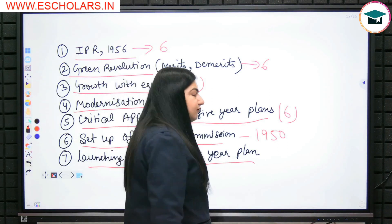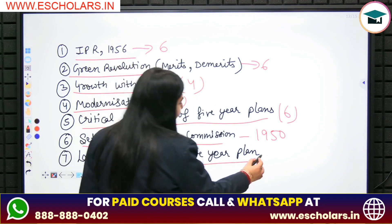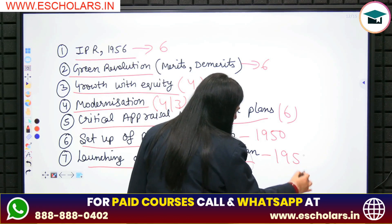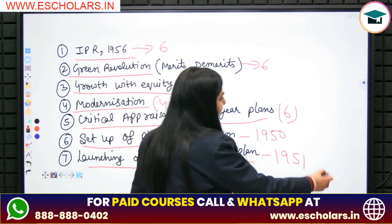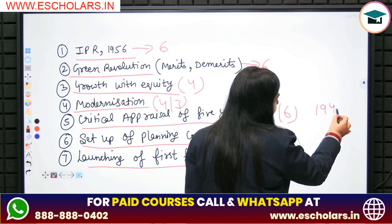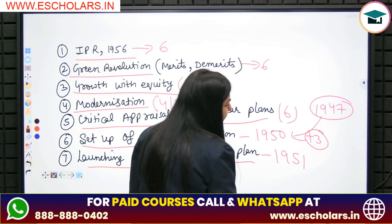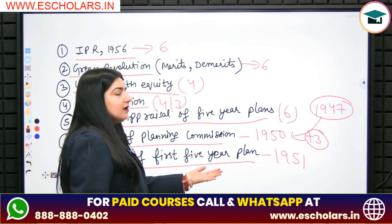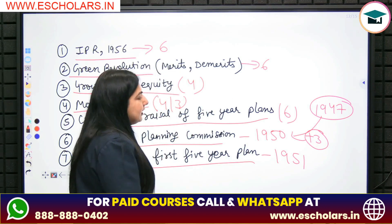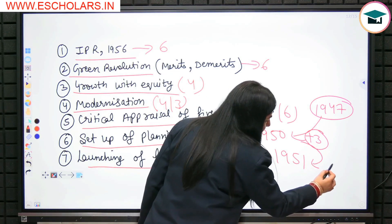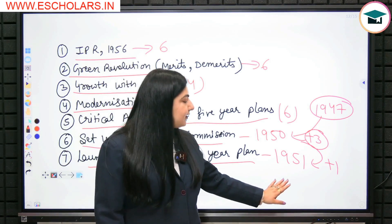Launching of First 5-Year Plan — First 5-Year Plan कब launch हुआ था? 1951 में। इन years को ध्यान में रखना। याद करने के लिए एक trick: India को independence मिली थी 1947 में, उसके 3 साल बाद Planning Commission setup हुई थी। Planning Commission set up ही क्यों की गई थी? 5-Year Plans बनाने के लिए। और Planning Commission के set up होने के 1 साल बाद, 1st 5-Year Plan launch कर दिया — that is 1951।